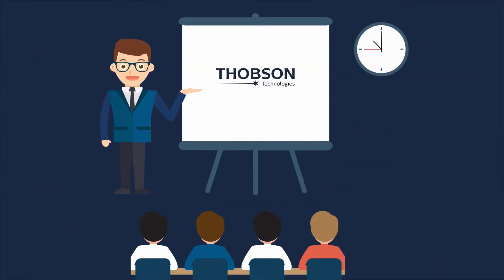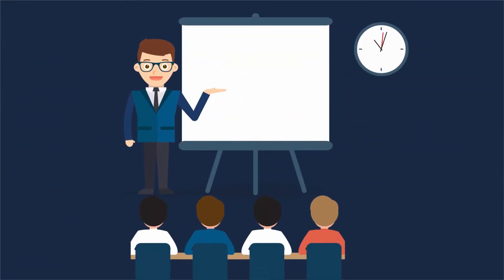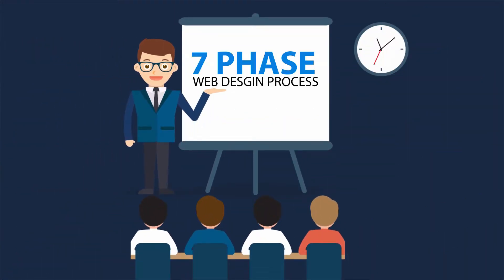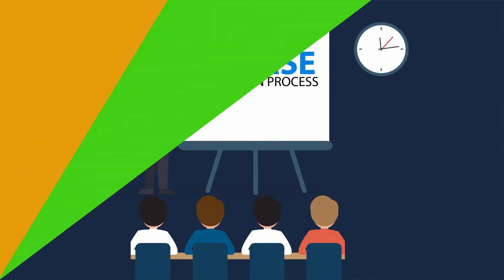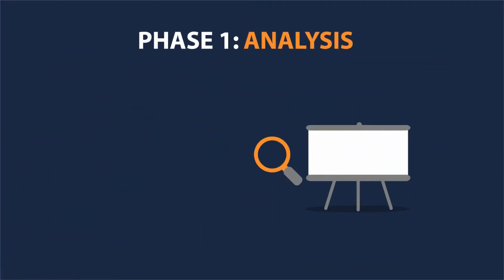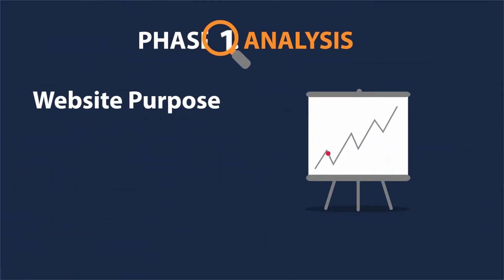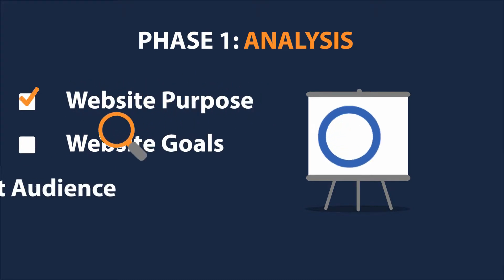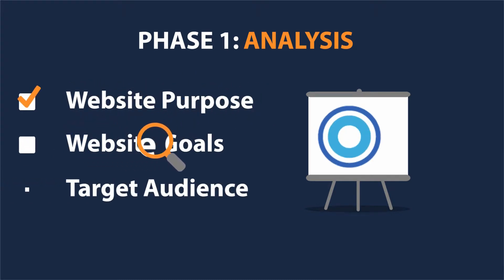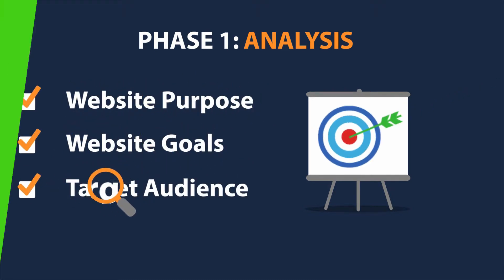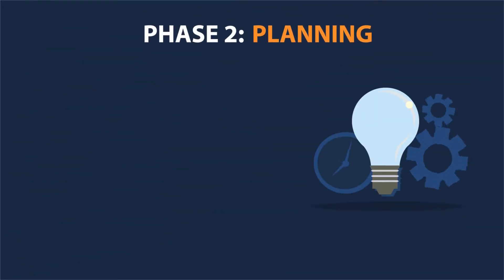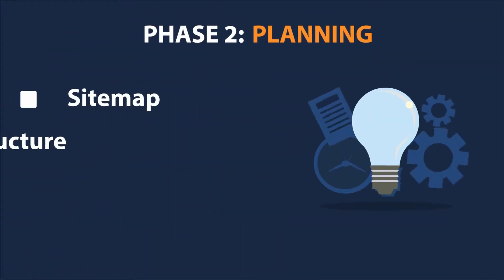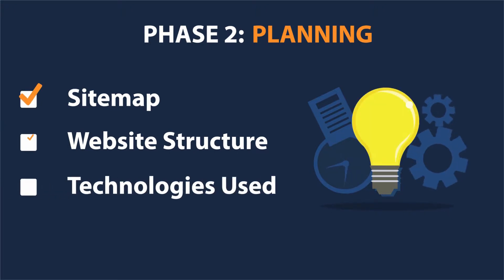This is how we make a website, by following our seven-phase web design process. Phase one is analysis — the first step is always about information gathering, identifying things like website purpose, website goals, and the target audience. Phase two is planning — this includes the definition of the site map, website structure, and the technologies we are about to use.